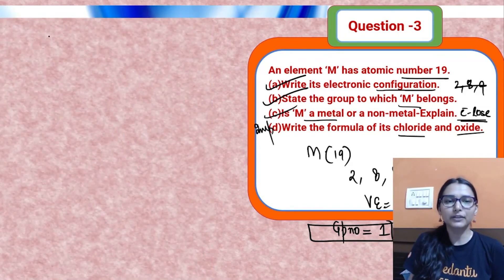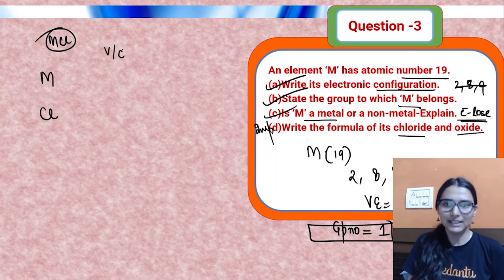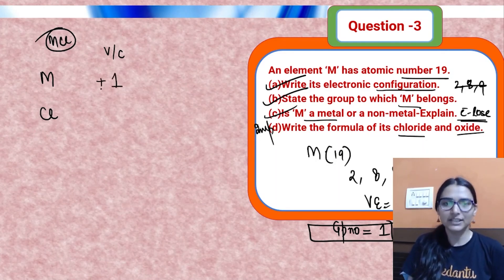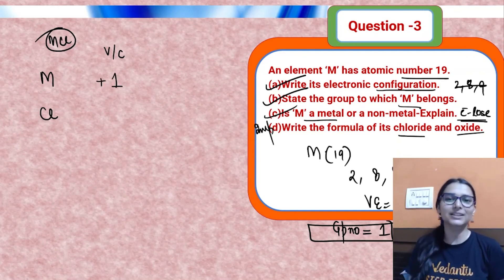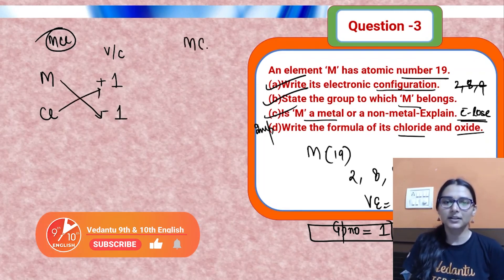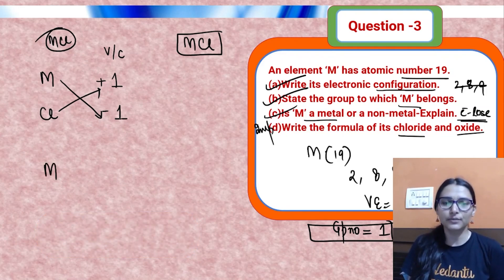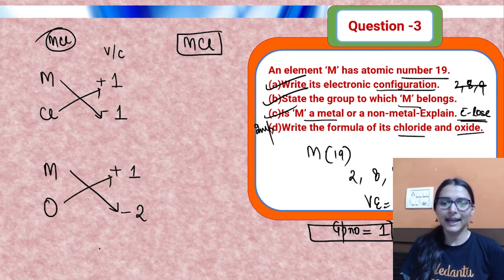For the chloride of M: M has valence +1 (metals form positive ions/cations), and chloride has charge −1. Exchange the valences using criss-cross — the formula is MCl. For the oxide: M has valence +1, oxide has charge −2. Exchange: M₂O is the formula. Match your answers.